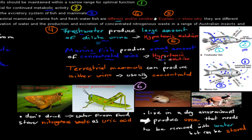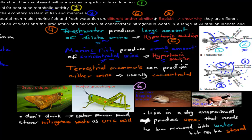A marine fish lives in a hypertonic solution — more salt outside than inside — so water travels out of the fish, which would cause it to shrivel up. But it produces concentrated urine to conserve water so it doesn't shrivel up, maintaining normal function. Another adaptation is that it constantly drinks, as opposed to the freshwater fish that rarely drinks. Because they live in different types of solutions, that's why there's a difference in urine concentration.